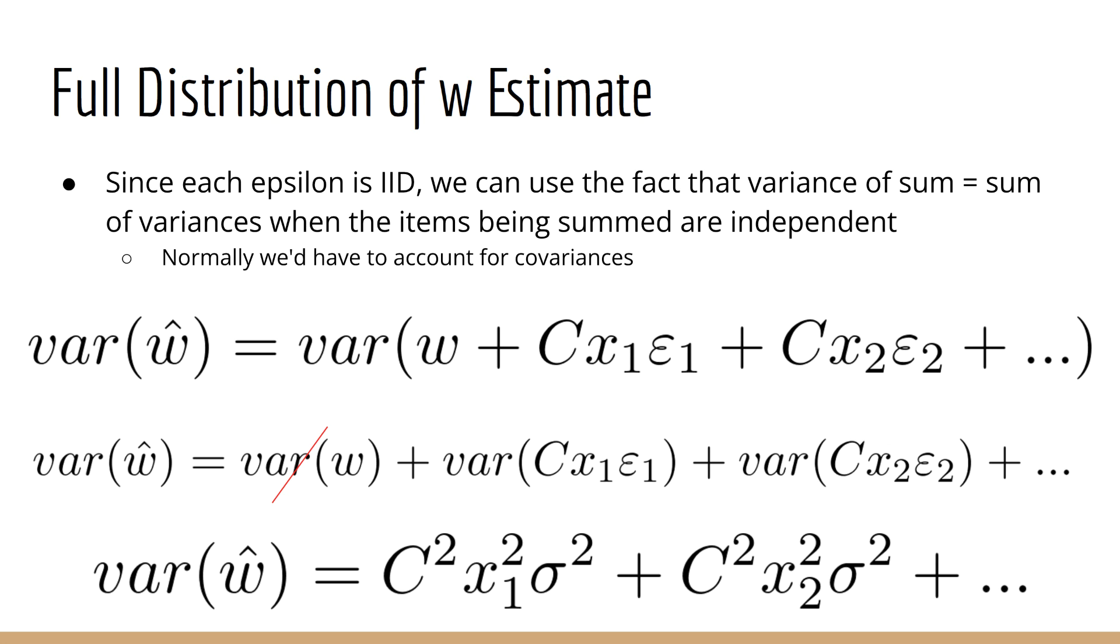Another important fact to recall is that all the epsilons are iid. That means independent and identically distributed. When we take the variance of the sum of random variables that are independent, it just becomes the sum of individual variances. Recall that this is not true in general. In general, we would need to account for covariances as well. But if the random variables are independent, then the covariances are zero, so we are just left with the sum of variances. Furthermore, we know that w is fixed, so its variance is zero. Thus, all we have left is the variance of the weighted sum of the epsilons.